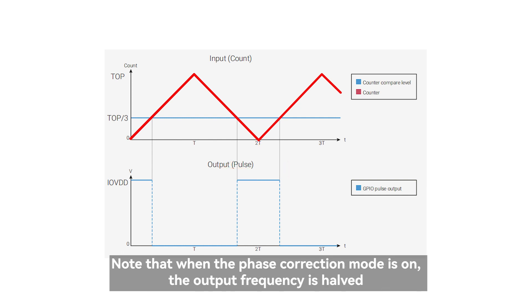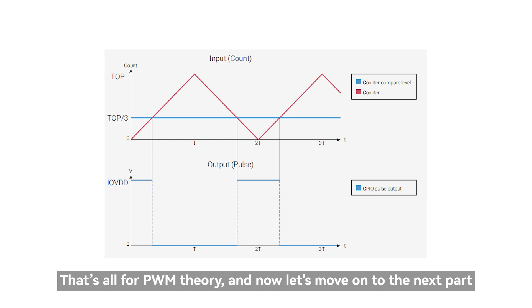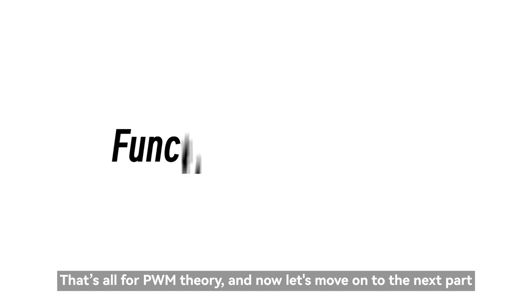Note that when the phase correction mode is on, the output frequency is halved. That's all for PWM theory, and now let's move on to the next part.